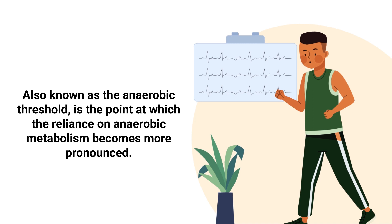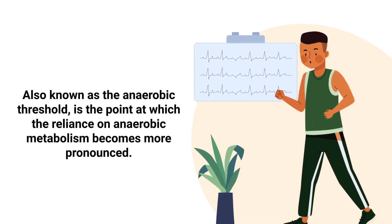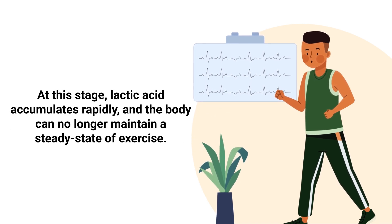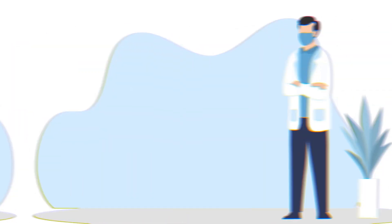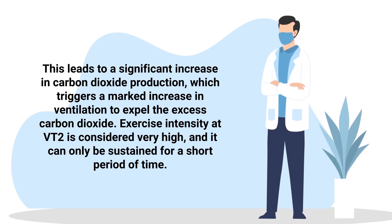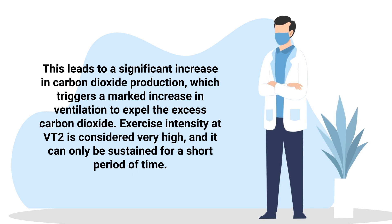The second ventilatory threshold, or VT2, is also known as the anaerobic threshold. This is the point at which the reliance on anaerobic metabolism becomes more pronounced. At this stage, lactic acid accumulates rapidly and the body can no longer maintain a steady state of exercise. This leads to a significant increase in carbon dioxide production, which triggers a marked increase in ventilation to expel the excess carbon dioxide. Exercise intensity at VT2 is considered very high and can only be sustained for a short period of time.